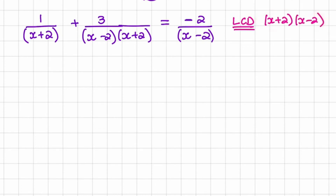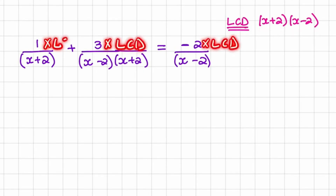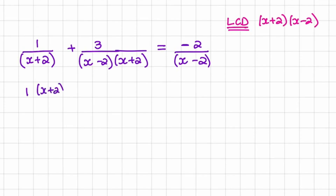Our aim now is to get rid of the fractions. What we want to do with the LCD is multiply every term with the LCD, and we'll only multiply in the numerator. So this will be 1 times x plus 2, x minus 2 — which is the LCD — over x plus 2. And you can see in the first term, by multiplying with the LCD, x plus 2 would cancel out.